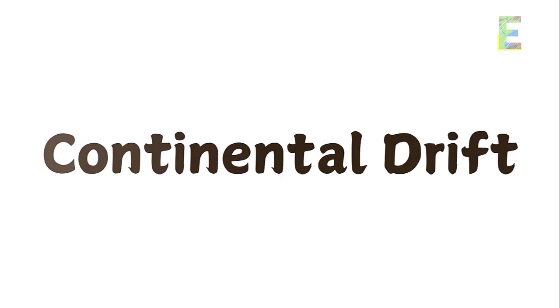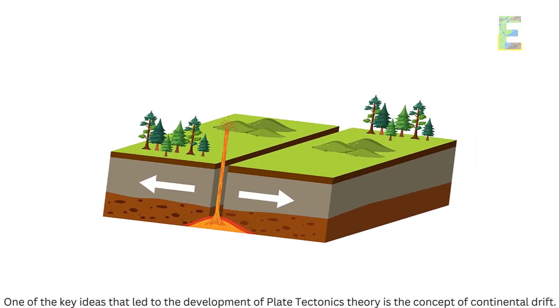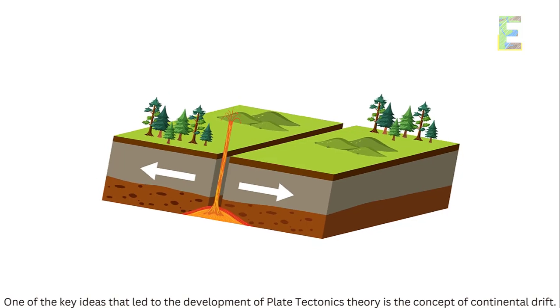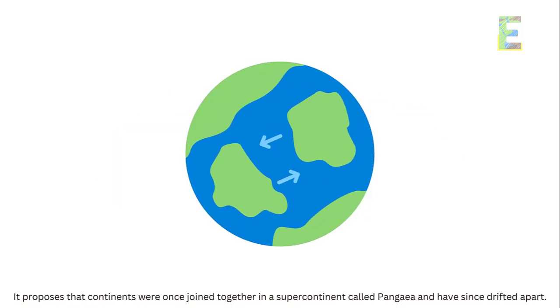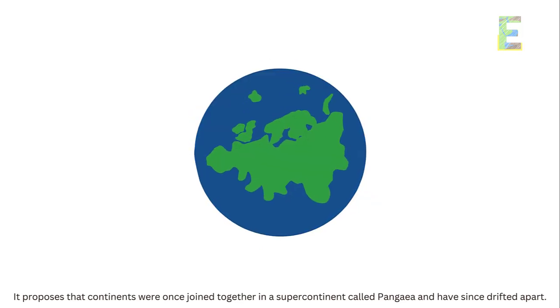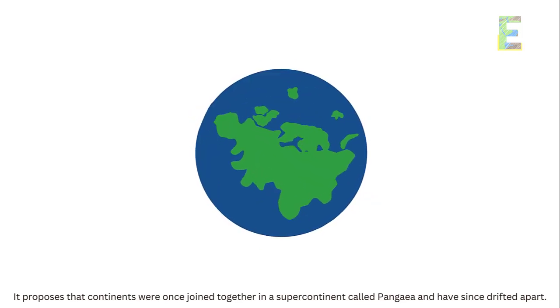Continental drift. One of the key ideas that led to the development of plate tectonics theory is the concept of continental drift. It proposes that continents were once joined together in a supercontinent called Pangaea and have since drifted apart.